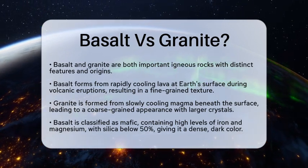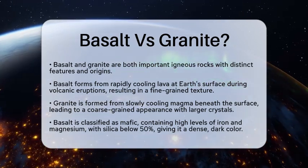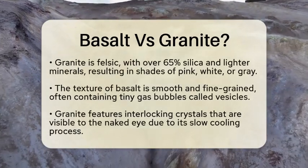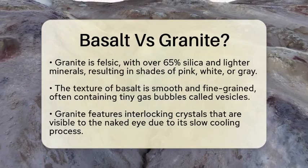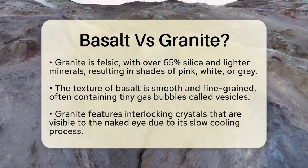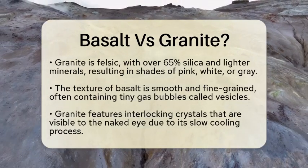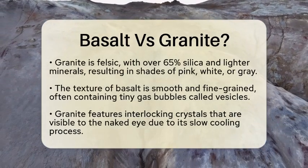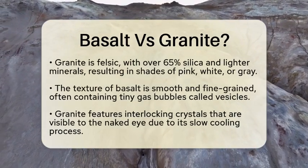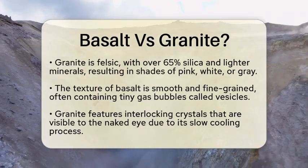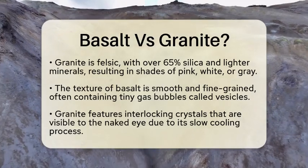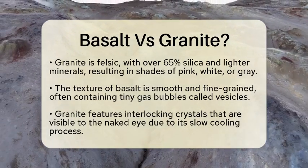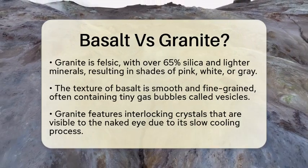Next, we should consider their mineral composition. Basalt is classified as mafic, meaning it has a high content of iron and magnesium minerals, with silica levels below 50%. This gives basalt its dense and dark color. In contrast, granite is felsic, containing over 65% silica. This composition includes lighter minerals, which results in granite appearing in shades of pink, white, or gray.